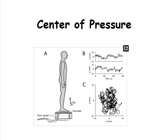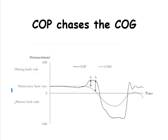This is a good measure of stability. If our center of pressure as we're standing still goes from plus and minus 10 millimeters of excursion to plus and minus 100 millimeters of excursion, you might surmise that that person is less stable. Here's a nice graph of the center of pressure chasing the center of gravity, with the y-axis showing distance at plus and minus 100 millimeters.